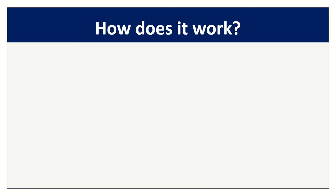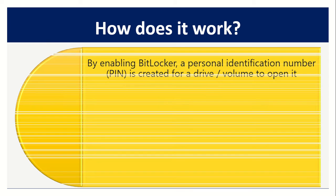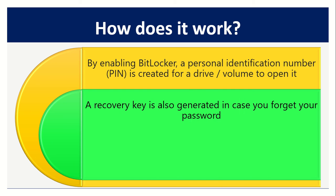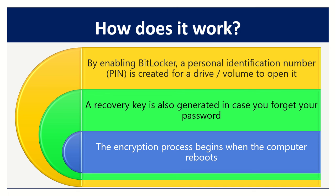How does BitLocker work? By enabling BitLocker, a personal identification number — that is, a PIN — is created for a drive or volume to open it. A recovery key is also generated in case you forget your password. The encryption process begins when the computer reboots.